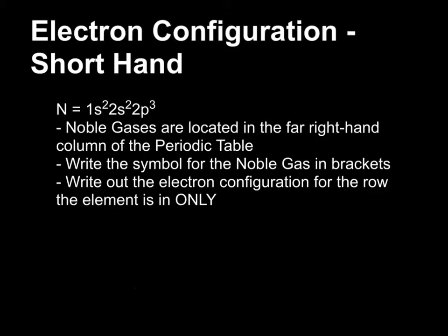Alright, so if we take a look at nitrogen, nitrogen has an electron configuration of 1s2, 2s2, 2p3. And that one's not too bad, but when we get to the elements near the bottom of the periodic table, writing out those electron configurations can get pretty long and tedious. So we want a shorthand way to write our electron configurations.